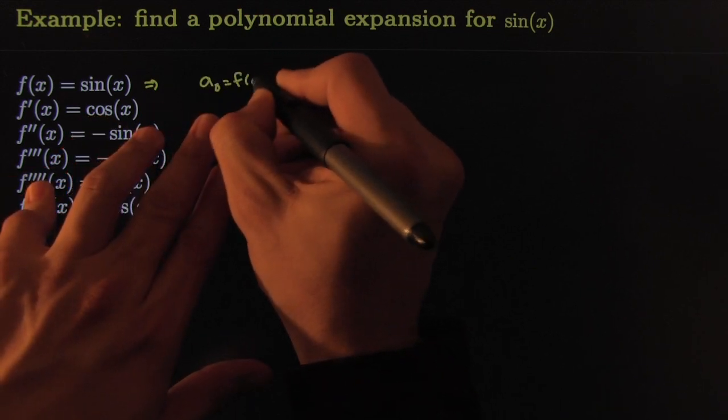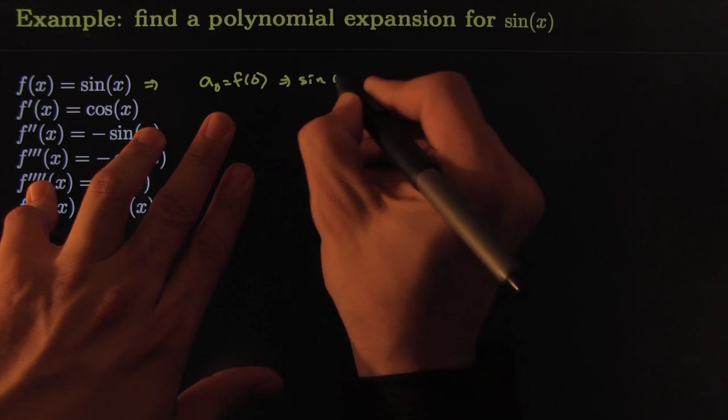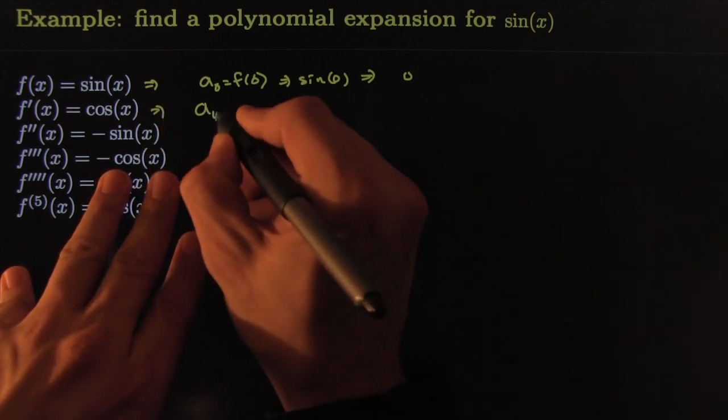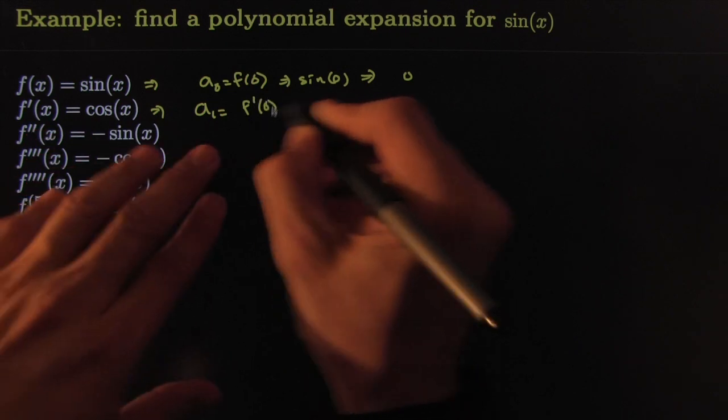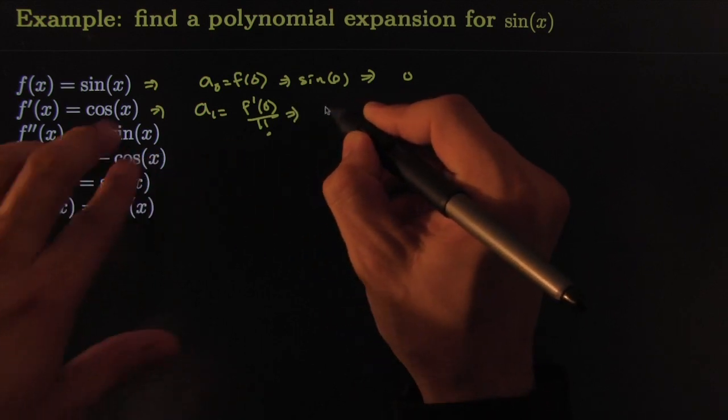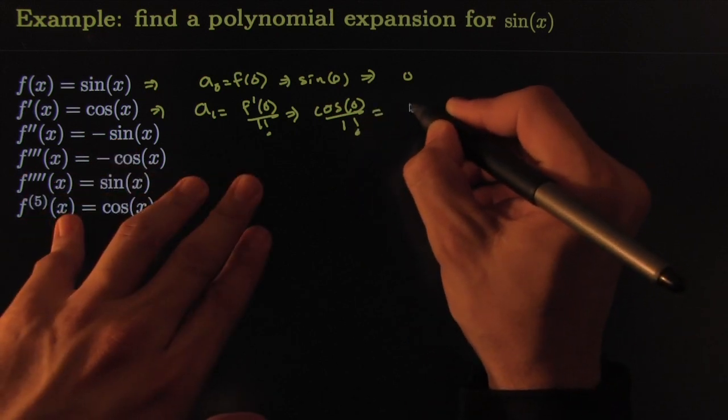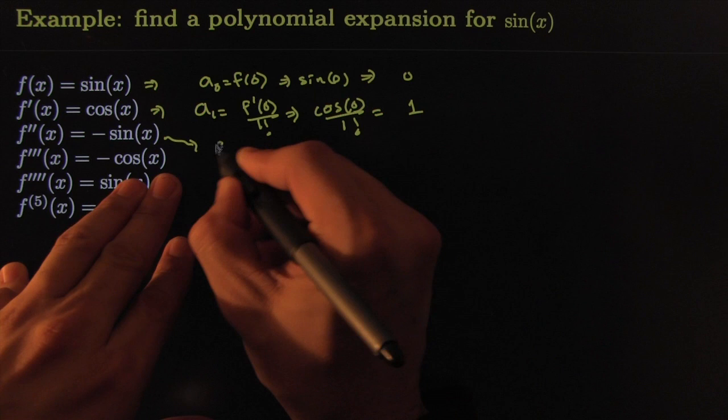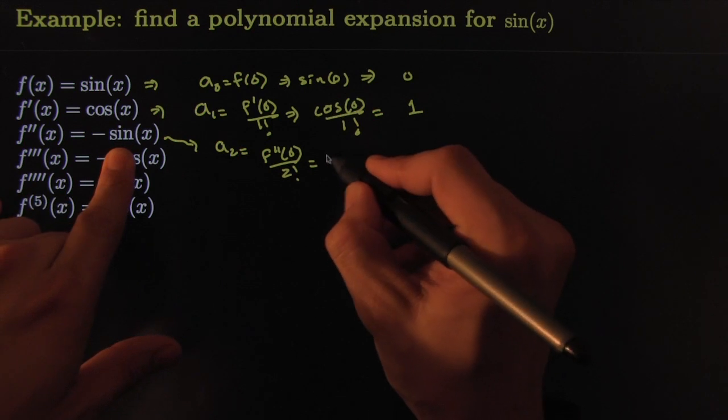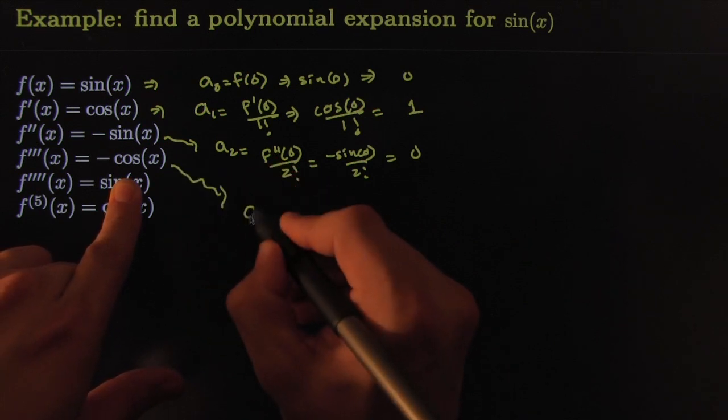I went ahead and computed them, and this is going to help me figure out my coefficients. I know that a_0 is just f(0)—let's expand around zero. So this would give me sin(0), which gives me just 0. That's super easy. a_1 I know is the first derivative f'(0), or if you want to be technical about it, over 1 factorial. That would be equal to cos(0) divided by 1 factorial, and of course that would be equal to 1. From here I get a_2: a_2 is f''(0) divided by 2 factorial. That would be negative sin(0) over 2 factorial, that would be 0.